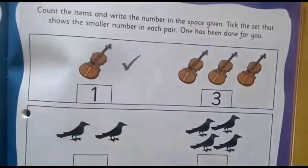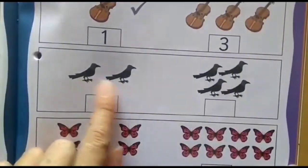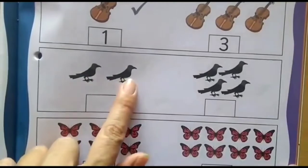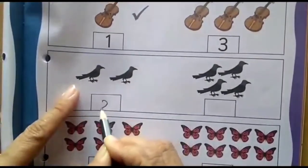First what we will do? We will count the objects and write in the respective boxes. And then we will compare. So how many crows can you see here? 1 and 2. So here which number will come? Number 2.